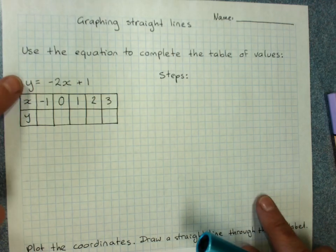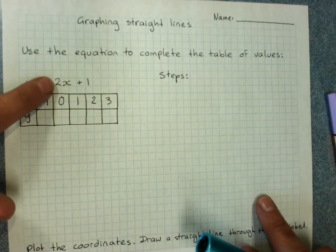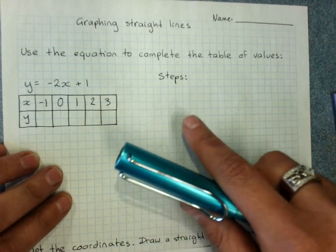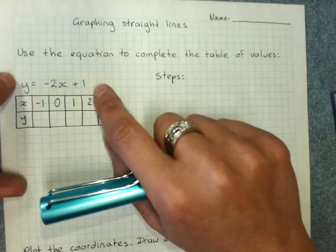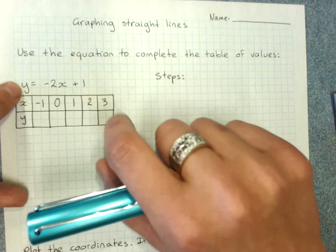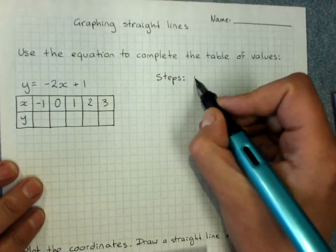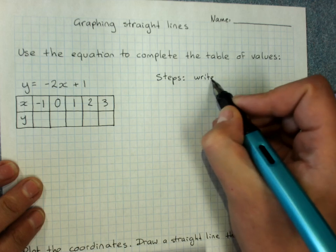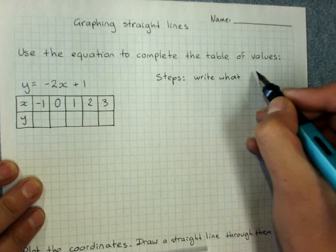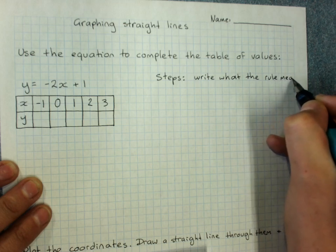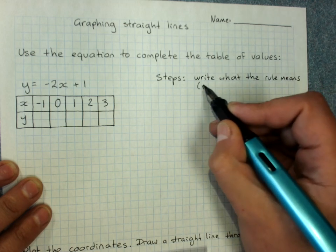So we're going to graph y equals negative 2x plus 1. And your steps are, you should probably work out what the rule means. So write out what the rule means.